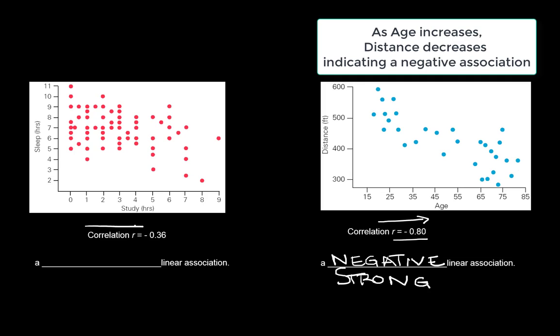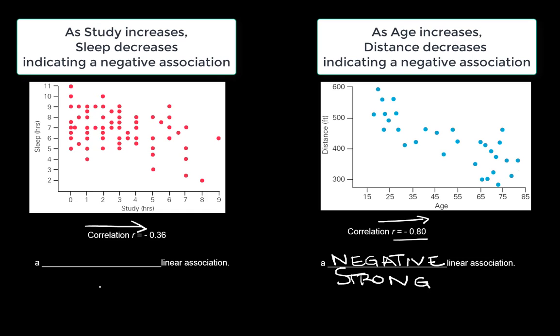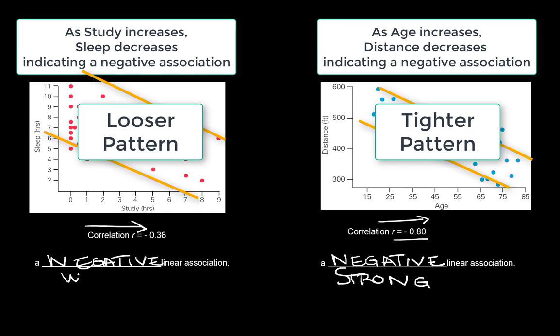As x increases, y tends to decrease—a negative linear association, meaning the two variables have a negative pattern with one another. However, this pattern is much looser, so I would call this weak.